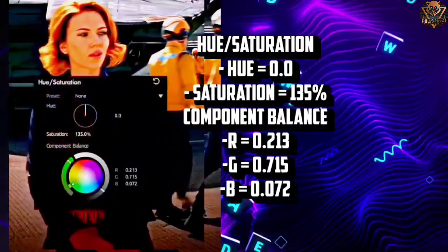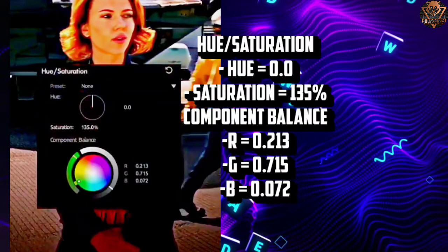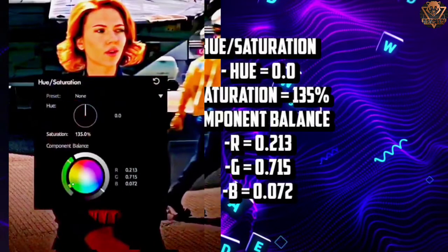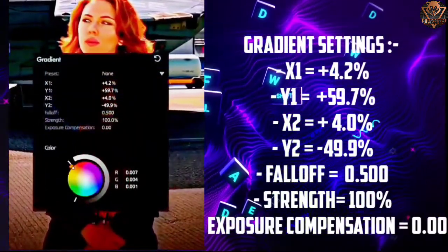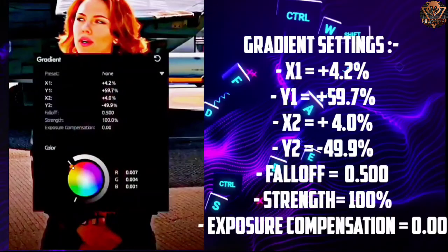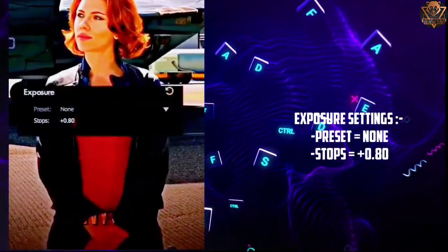Then Hue and Saturation: Hue will be 0.0, Saturation will be 135%. Components Balance setting: Red will be 0.213, Green will be 0.715, Blue will be 0.072. Gradient settings: X1 equals positive 4.2%, Y1 will be positive 59.7%, X2 will be positive 4.0%, Y2 will be negative 49.9%. Fall off will be 0.500, Strength will be 100%, Exposure compensation will be 0.00. Exposure settings: Preset equals none.